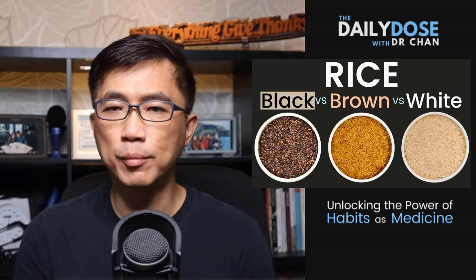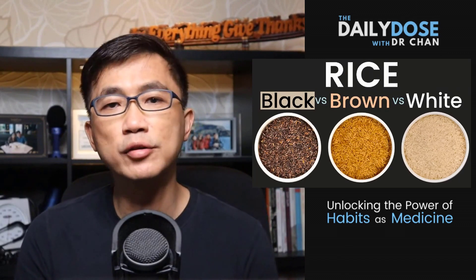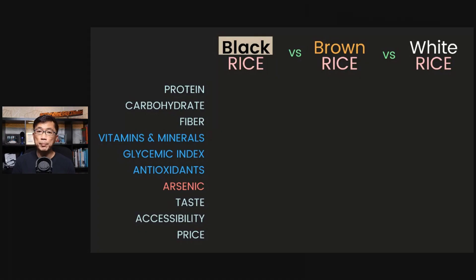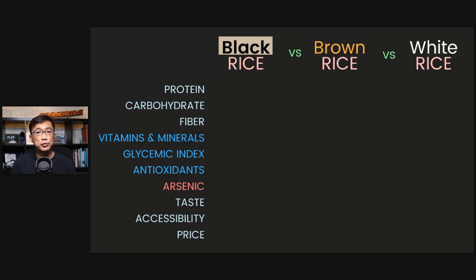Understanding this is important when we compare black rice versus brown rice versus white rice, because we are comparing the hundreds of varieties of black rice versus the thousands of different varieties of brown and white rice. The nutritional profile of each variety of rice is different, even when they are of the same color. So it is not helpful or even necessary to go into the specific values for each variety.